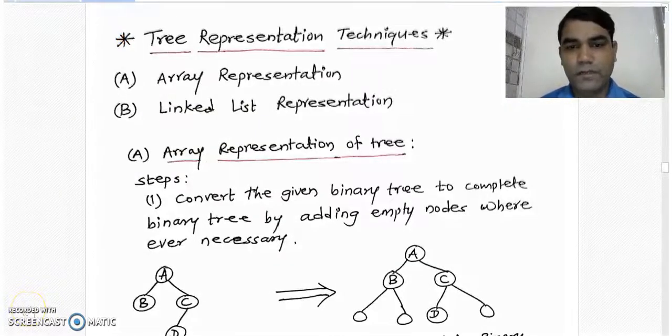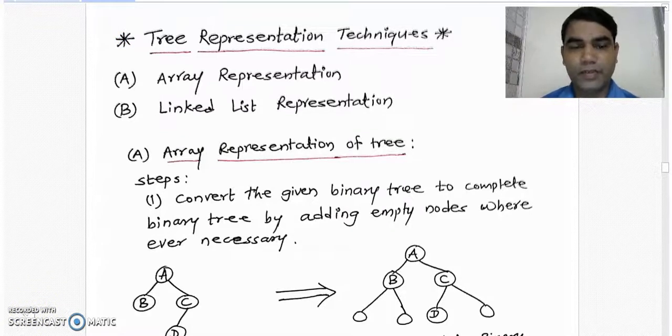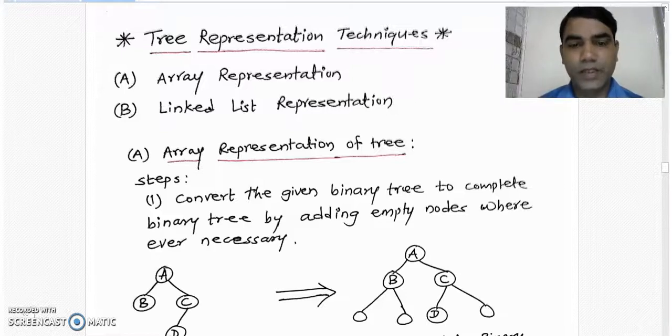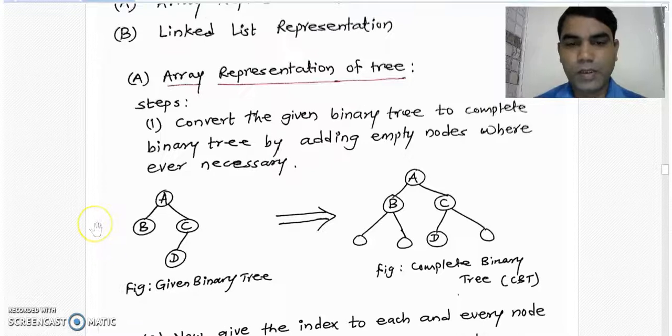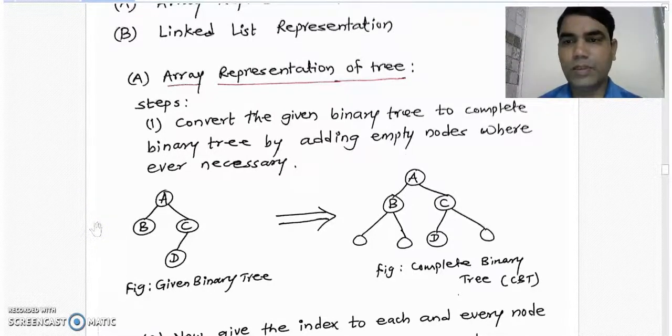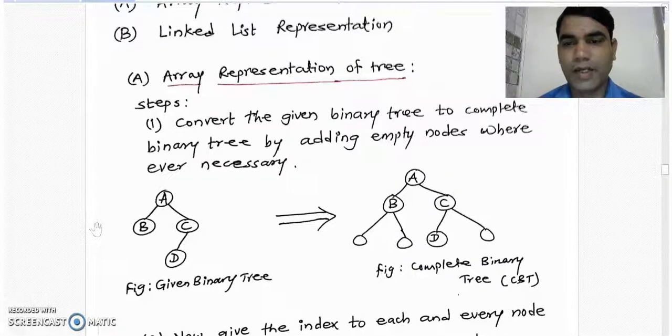Now we will see the first method to represent the binary tree, that is array representation. To represent any binary tree using array, we use the following steps. In step 1, we convert the given binary tree to the complete binary tree by adding empty nodes wherever it is necessary.